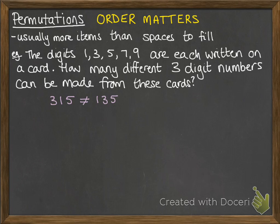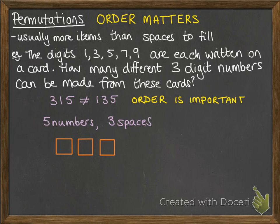Now, the order matters here. If we picked 3, 1, 5, that would give us a different number than if we'd picked 1, then 3, then 5. The order makes a different outcome, so we're using permutations. We've got five numbers to pick from and three spaces to fill. In the first place, we've got a choice of 5. In the second, once we've picked that first one, we've got a choice of 4. And once we've picked the first two, we've only got three we could choose from. That would give us 60.